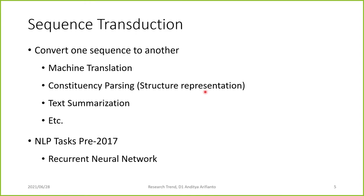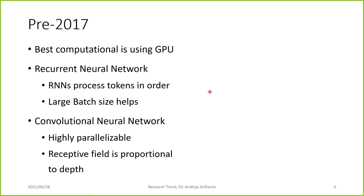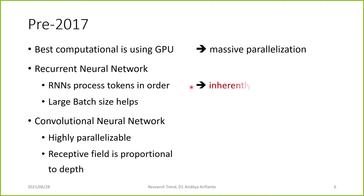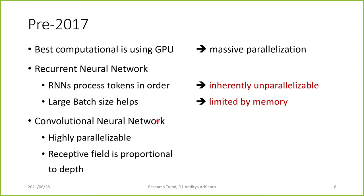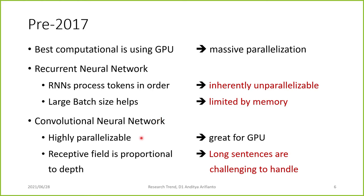For NLP tasks before 2017, the go-to model was recurrent neural networks. But after 2015 or so, we knew that the best computational power in machine learning and deep learning comes from using GPUs due to massive parallelization. The problem with RNNs is that they process tokens sequentially, making them inherently unparallelizable. We can increase batch size to overcome this, but that's limited by available memory. That's why, from around 2015 to 2017, people tried moving to convolutional neural networks using 1D convolution, which is highly parallelizable.